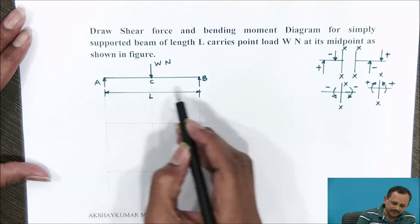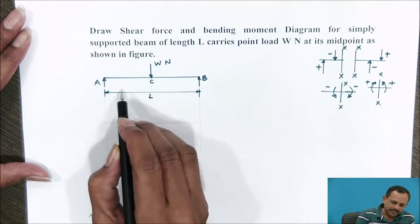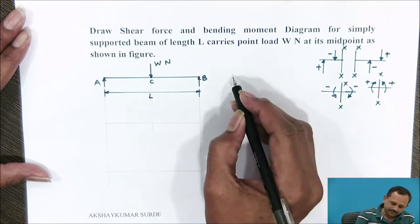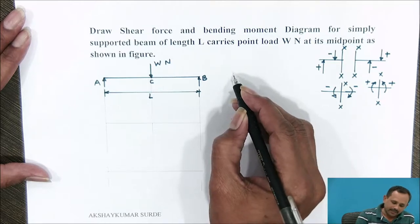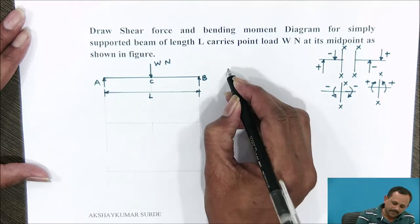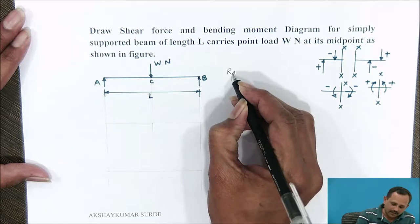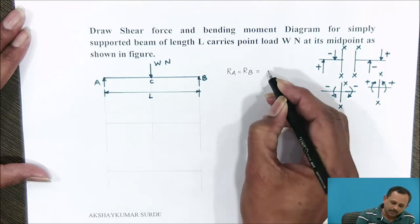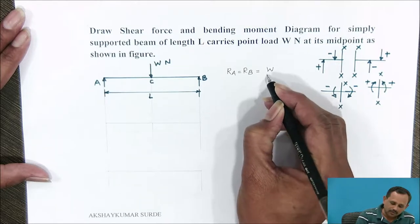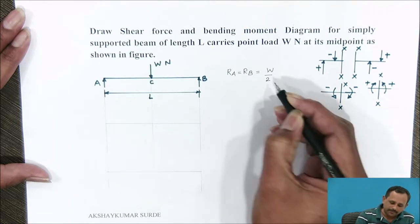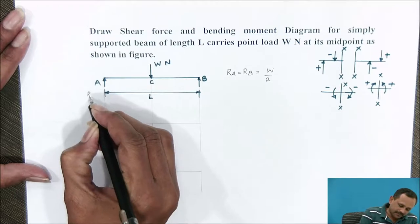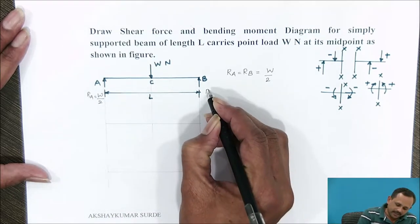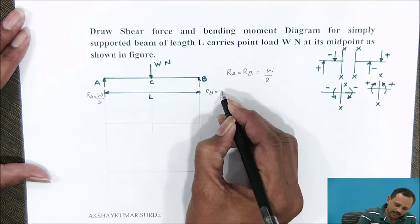This is a simply supported beam A-B, supported at A and B, carrying a point load at its center. As the beam is loaded at the midpoint, the reactions at A and B are equal in magnitude, each equal to half of the total load acting on the beam. Therefore, reaction at A is W/2 and reaction at B is also W/2.